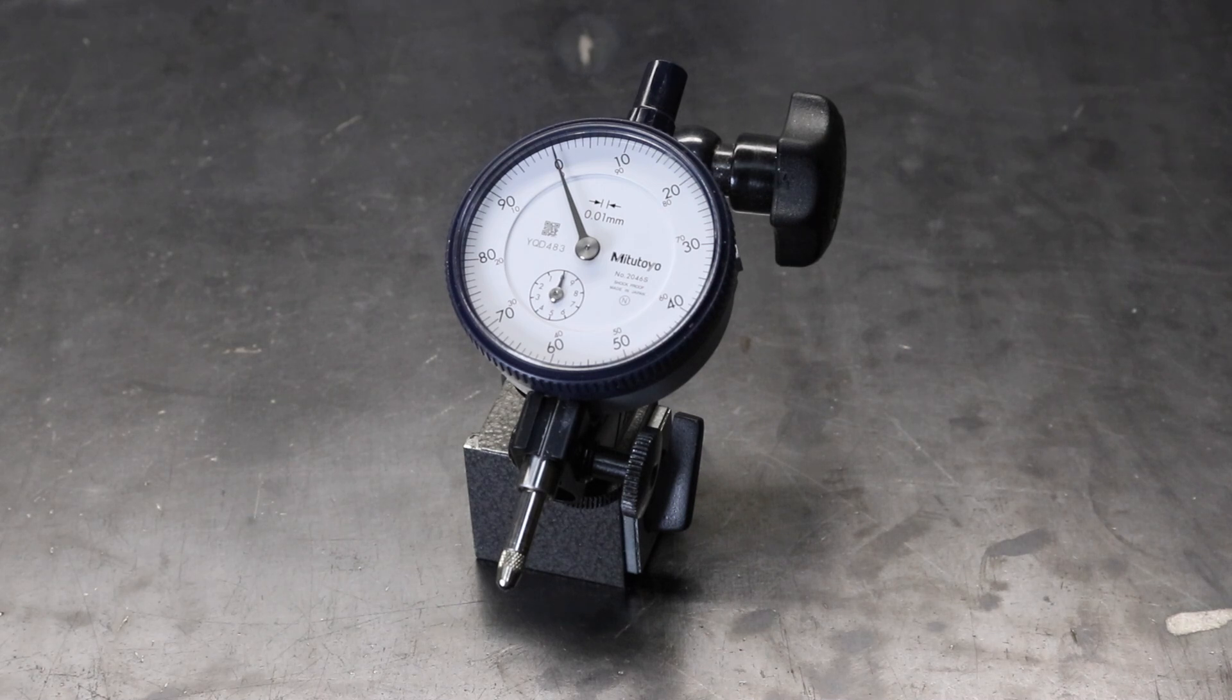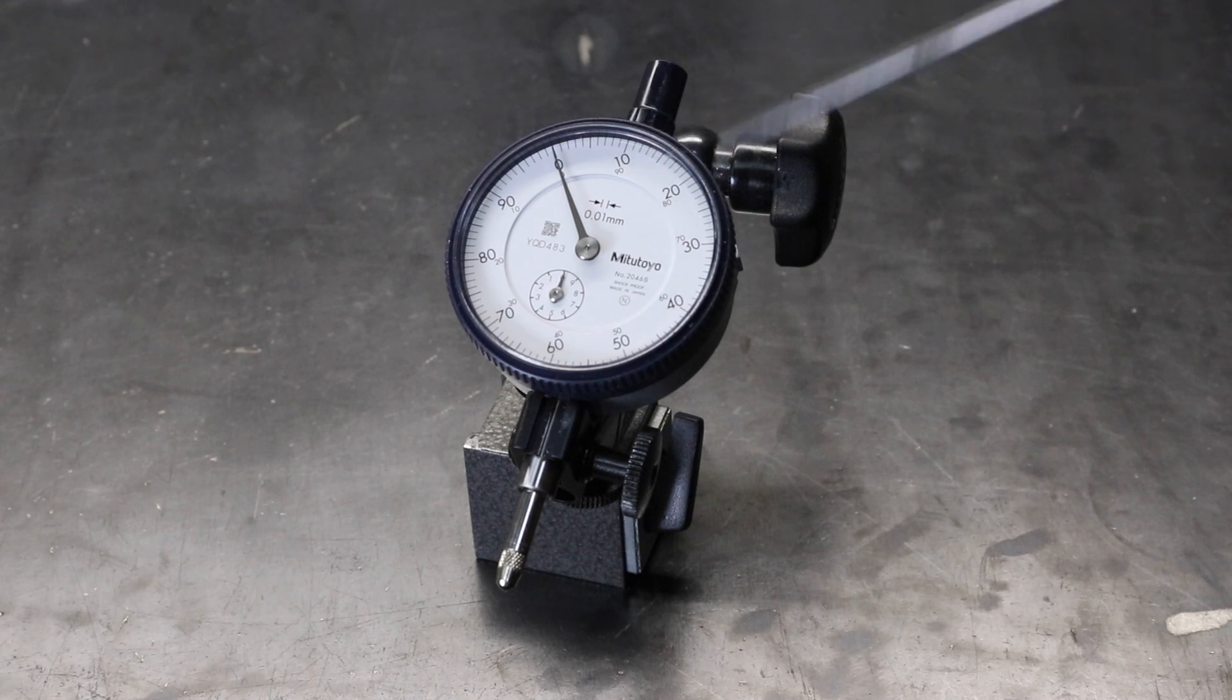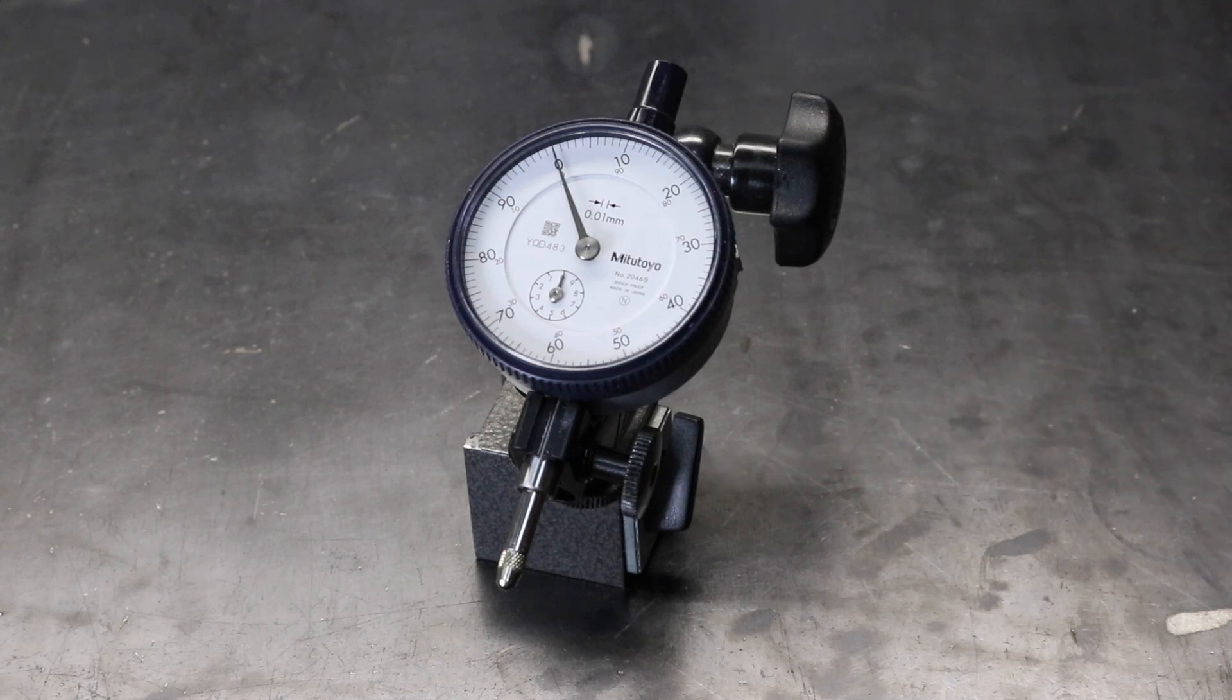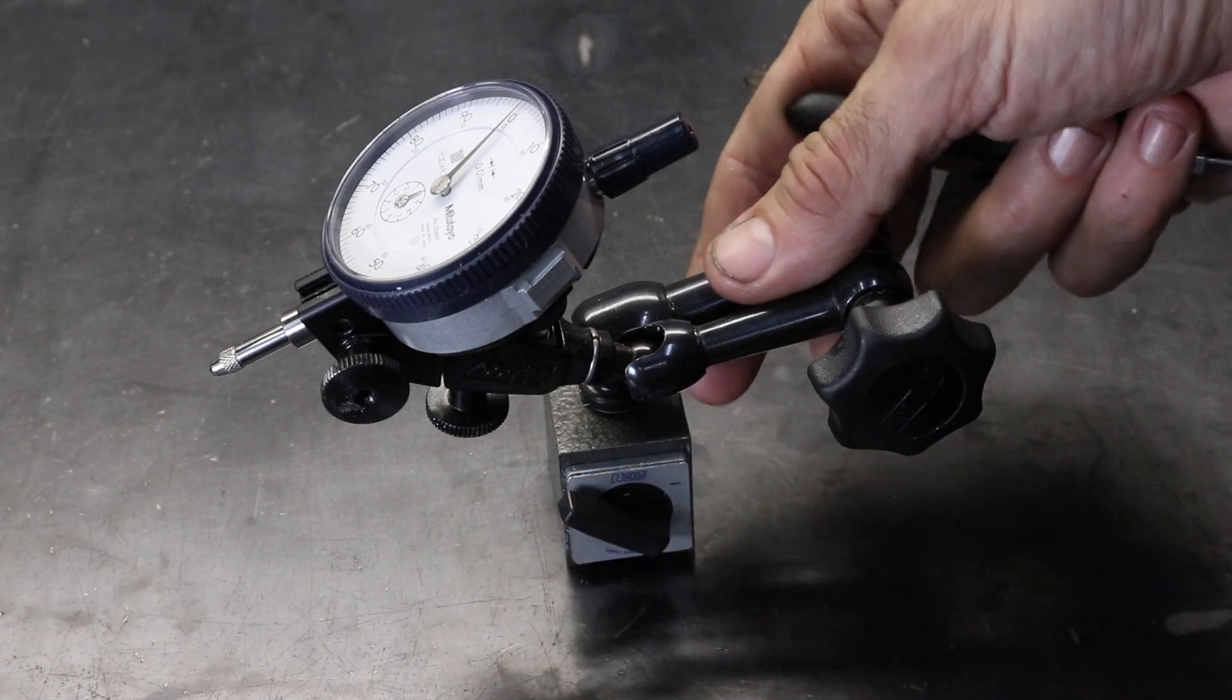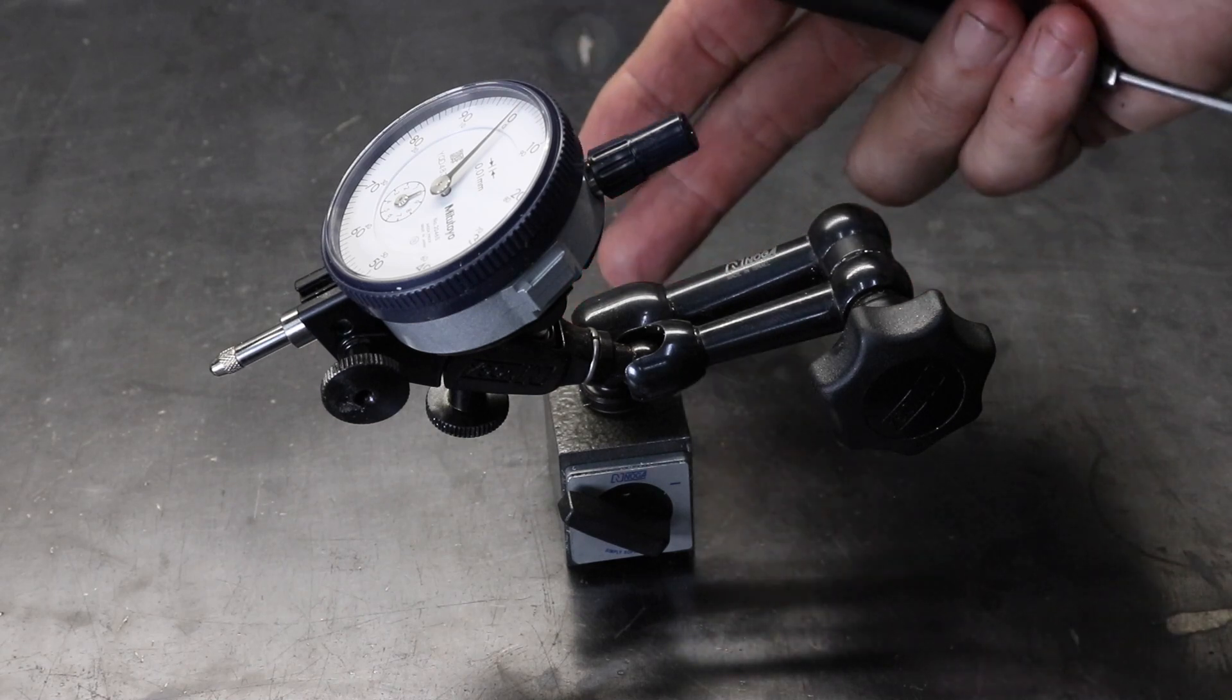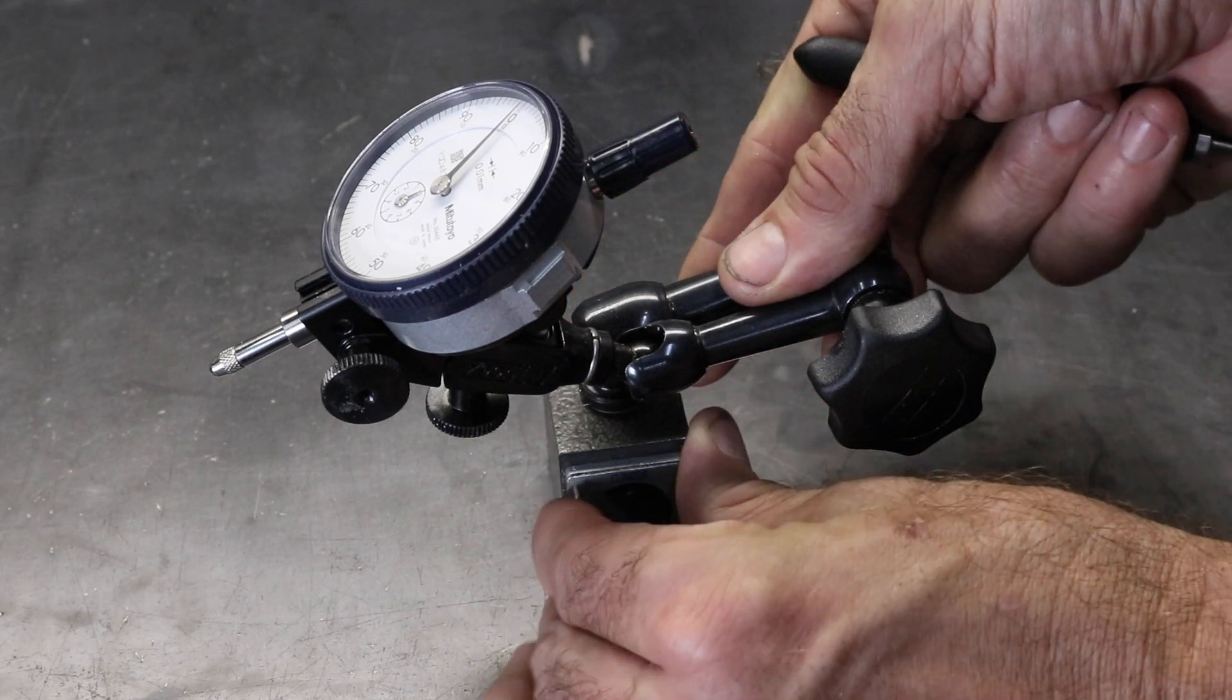To perform run out or lateral deflection measurements, it's handy to have a dial gauge like this. This particular one is made by Mitsutoyo and the resolution is 0.01 millimeters, so 10 microns per division. It has a relatively long stroke of 10 millimeters, so handy for performing various measurements. It's on a magnetic base made by Noga and this is a steel bench, so I can lock it by moving the switch like that and it's very secure. You could mount it onto the frame and perform measurements, for example, conrods, lateral deflection, various measurements. A really handy tool to have.